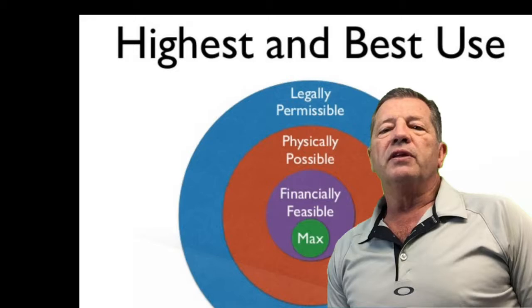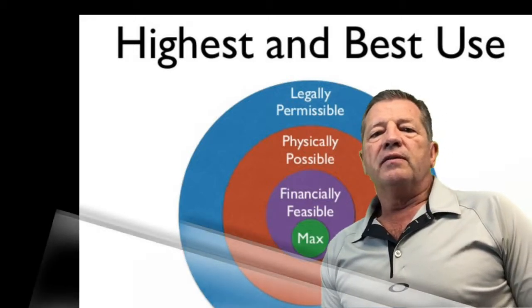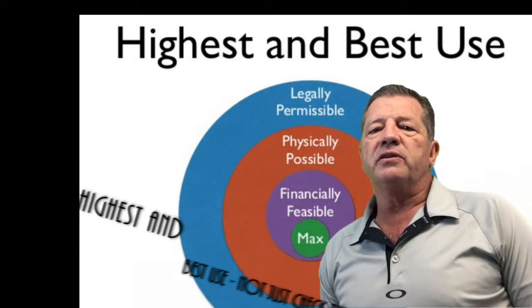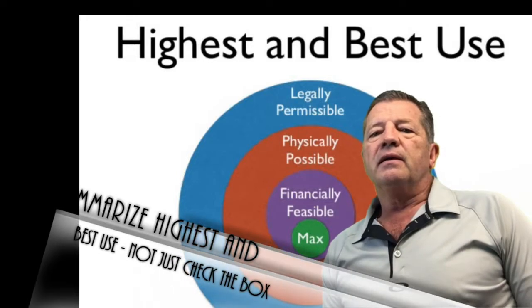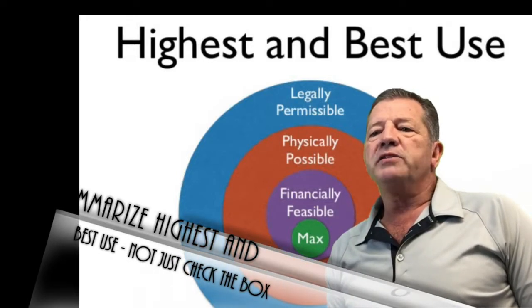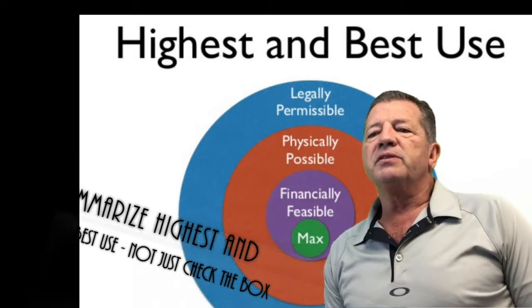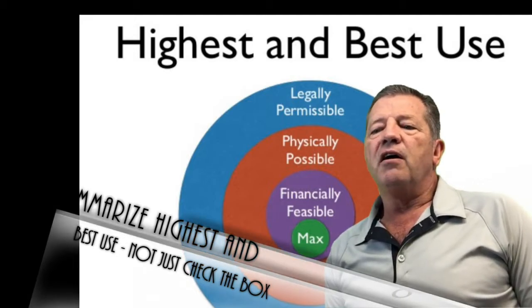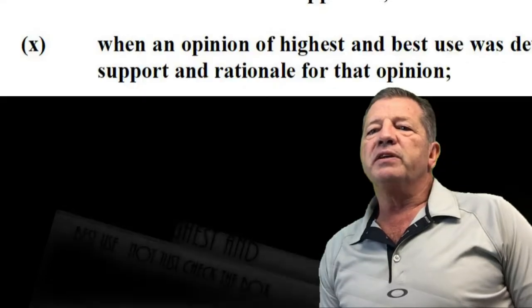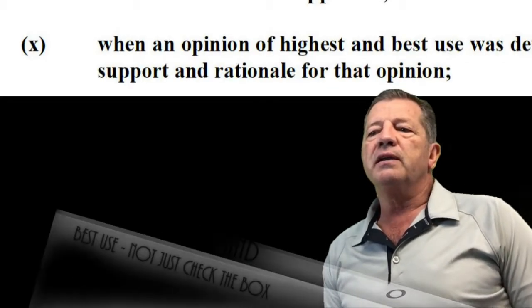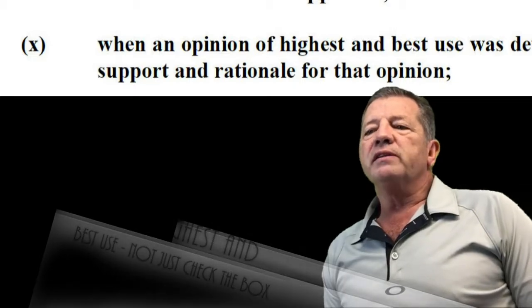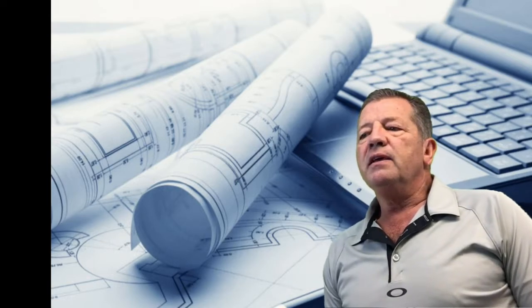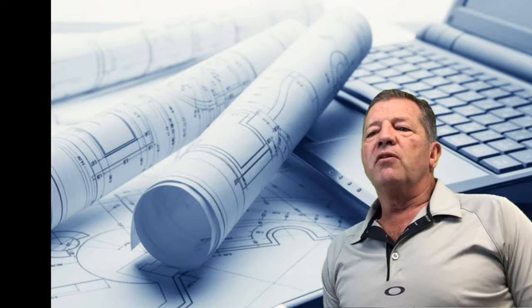Number two on the list is highest and best use. USPAP indicates that when the purpose of the appraisal is to develop an opinion of market value, the highest and best use must be summarized in an appraisal report. Often times, the appraiser has checked the box but has failed to provide the additional summarization of that highest and best use. This becomes particularly important when the property is located in a commercial zone, is a non-conforming property under current zoning, or when the land size is larger or smaller than typical.